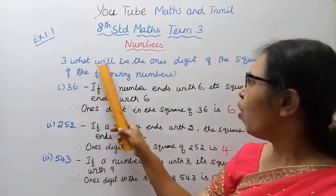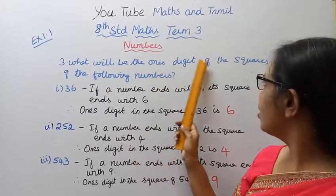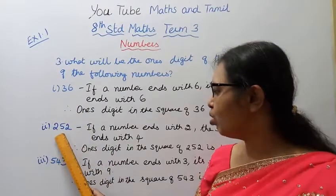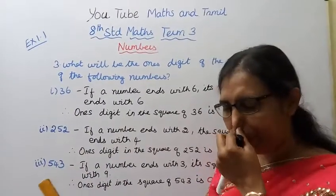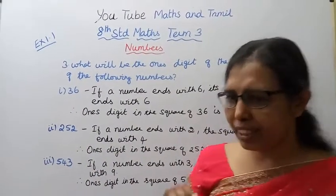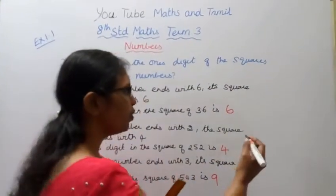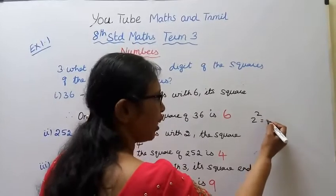Question: What will be the ones digit of the squares of the following numbers? The numbers are 36, 252, and 543. Let's look at squares - two square, three square, nine square.